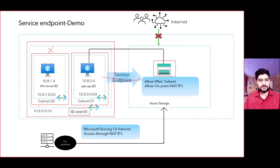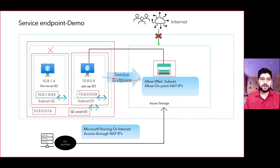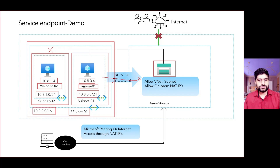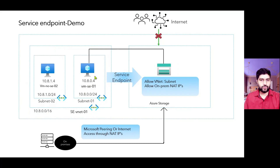This is the virtual network range, this is subnet 2's range, and this is subnet 1's range. We have two VMs deployed: one is called VMSC01 and the other is called VMNOSC02. They are deployed in two different subnets and assigned the first private IP available. Now let's switch over to the Azure portal.